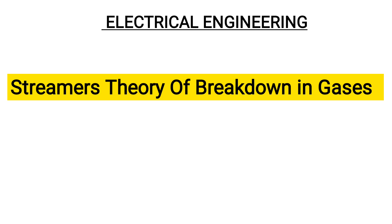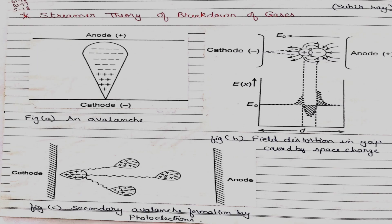This is also the most important part in high voltage engineering. There are a lot of disadvantages, or we can say limitations, to Townsend's theory. In the last videos we saw Townsend's theory and its limitations, and these disadvantages have been addressed with the help of streamer's theory.